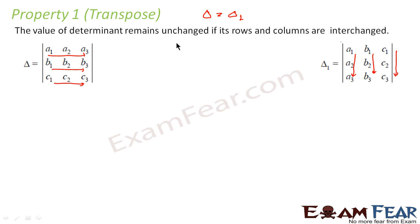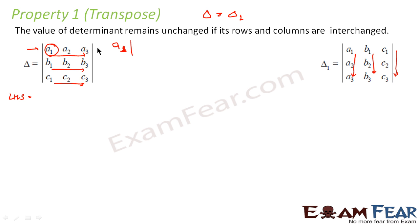Let's take the LHS first. We find the determinant using the first row. So we take a1 into minus one to the power of one plus one — that cancels to give us the minor with elements b2, b3 and c2, c3.